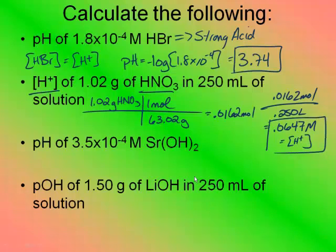Now it wants me to calculate the pH of a 3.5 times 10 to the negative 4 molar strontium hydroxide solution. Strontium hydroxide is a strong base. So since it's a strong base, the concentration of the base is equal to the concentration of OH- in the solution.